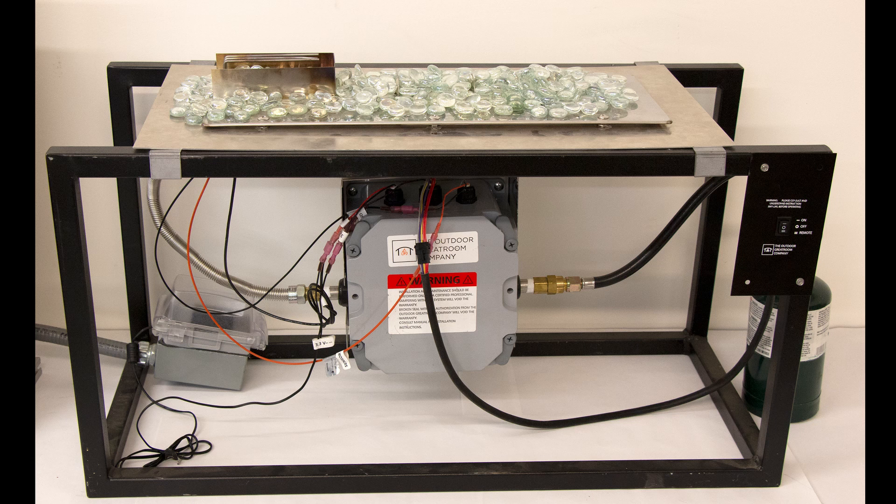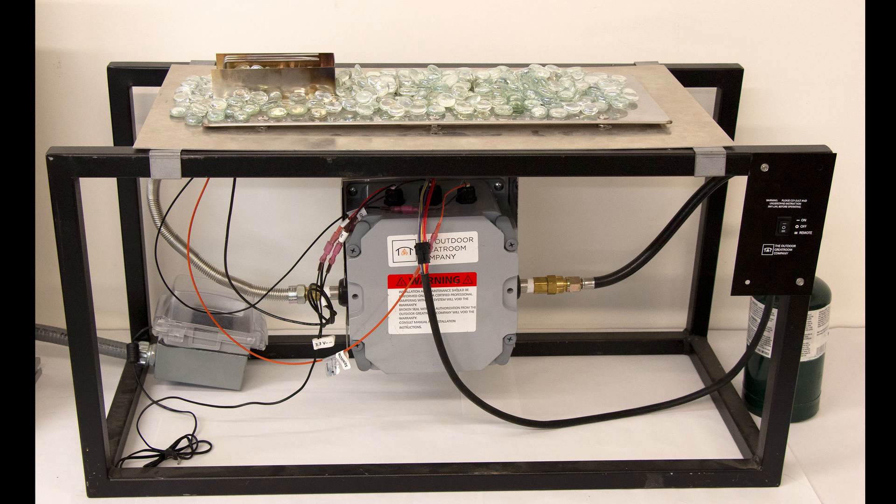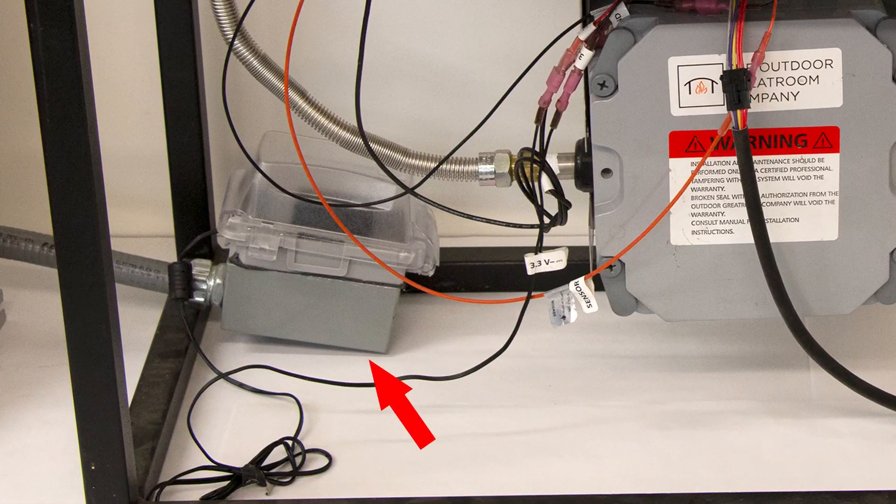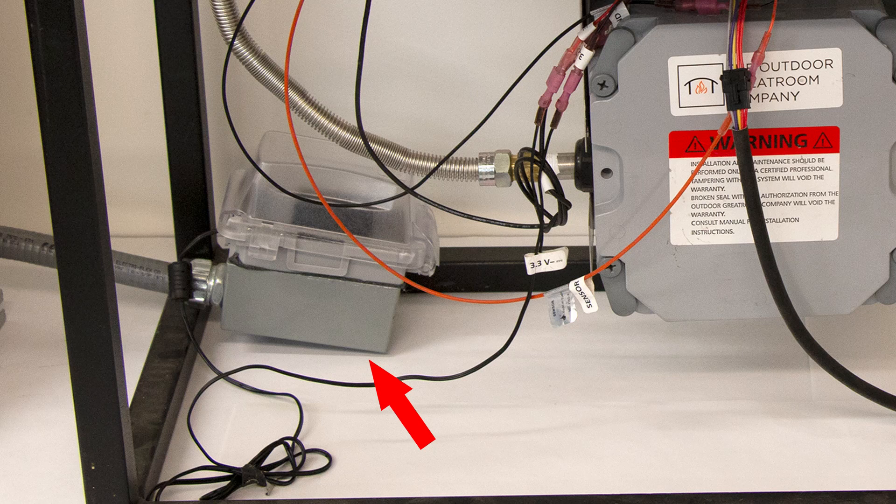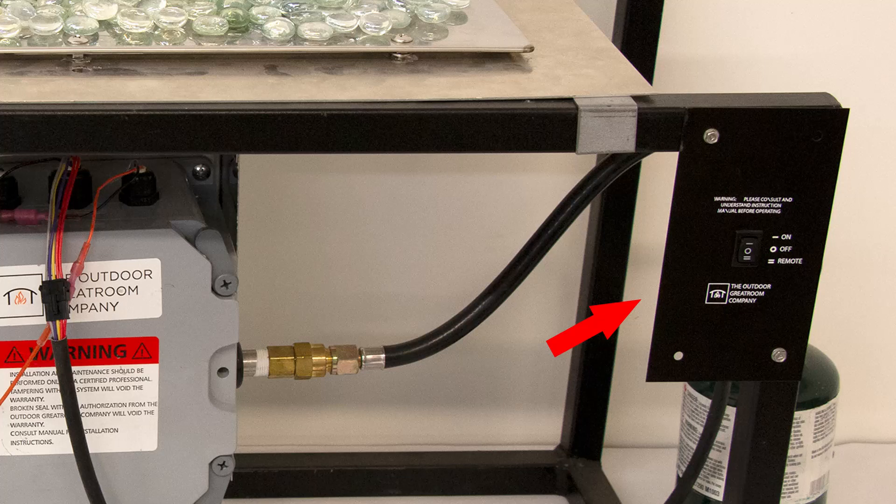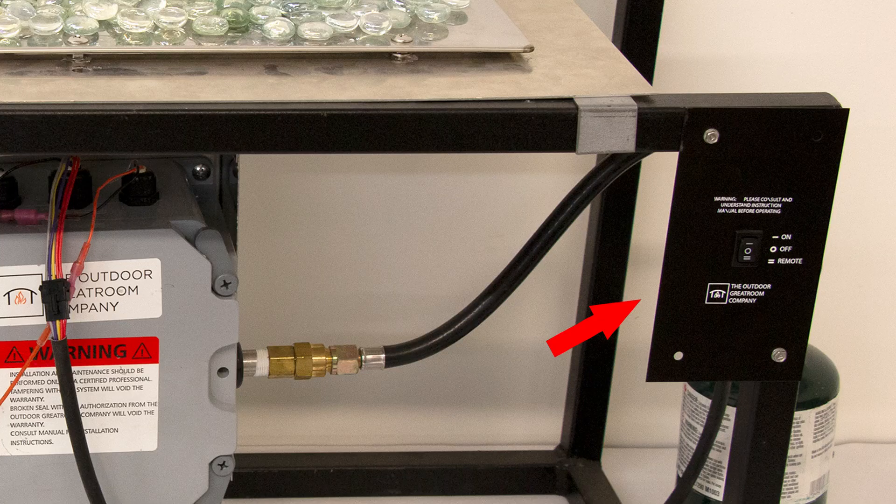We will be demonstrating the ignition sequence using this DSI demo burner. Your burner may be a different size or shape, but they all function exactly the same way. You can see here that the burner's transformer is plugged into a covered junction box for its source of power. In this case, we also have an on-off switch attached directly to the burner or fire pit.